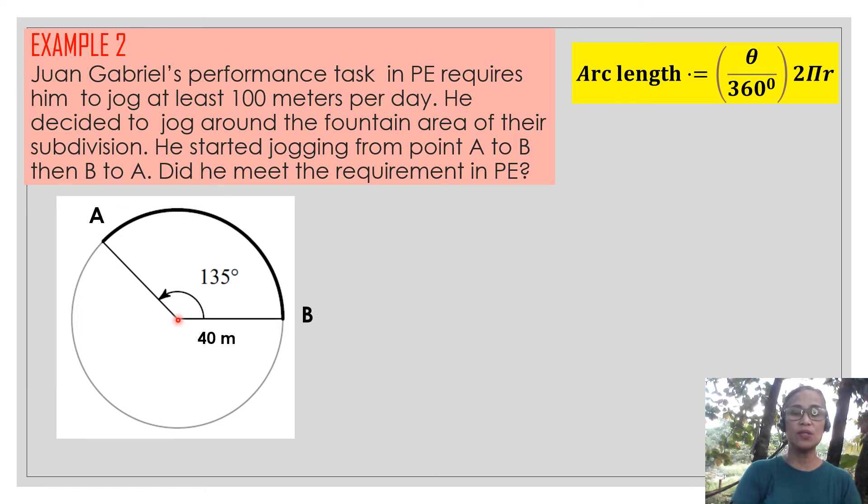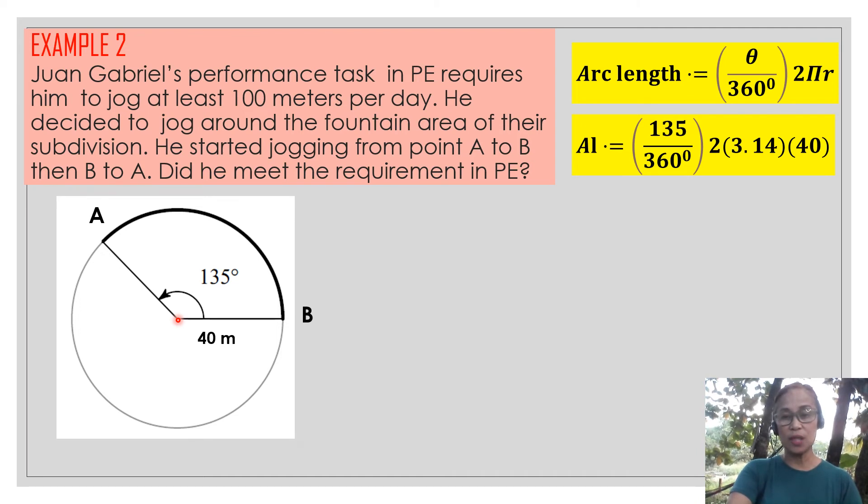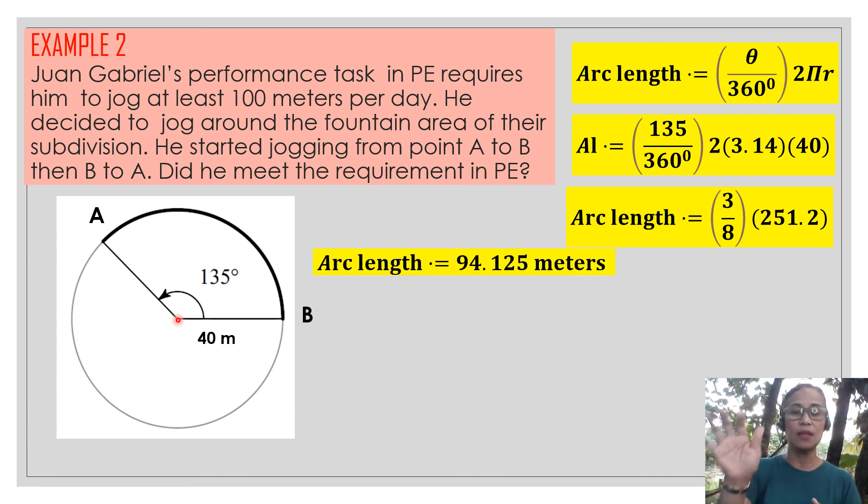So let's use this formula, theta over 360 multiplied to 2 pi r, substitute 135 over 360 times 2 times 3.14 times 40 meters, which is the radius. Then we simplify that 135 over 360 is just 3 eighths, 3 eighths of the whole circumference, and the whole circumference is 251.20 meters. So multiplying that to 3 eighths, we get an arc length of 94.125 meters.